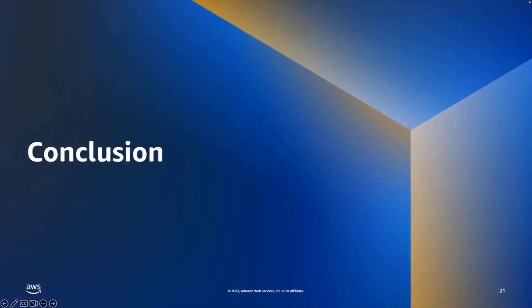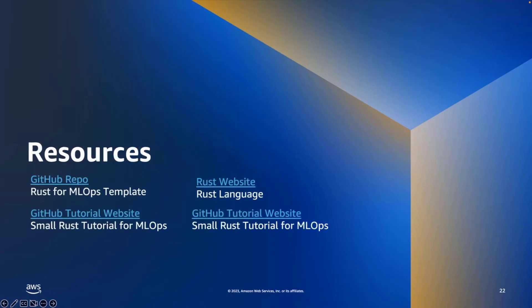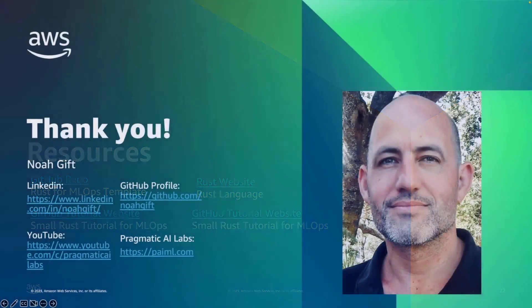That's it for this presentation. I hope you learned about the exciting things about Rust. We'll cover Rust for ML Ops and SageMaker in later presentations. I encourage you to explore Rust on your own using the following resources: a GitHub repo with a Rust for ML Ops template, examples on AWS, a tutorial based on Duke graduate cloud computing course lecture notes, the Rust language website, and a GitHub tutorial. You can reach me on LinkedIn, YouTube, GitHub, and at Pragmatic AI Labs.